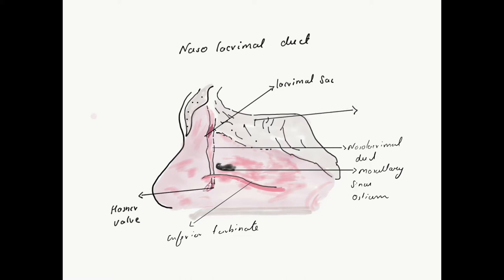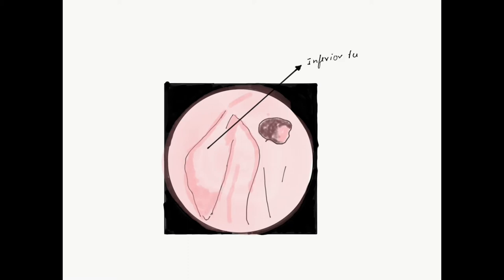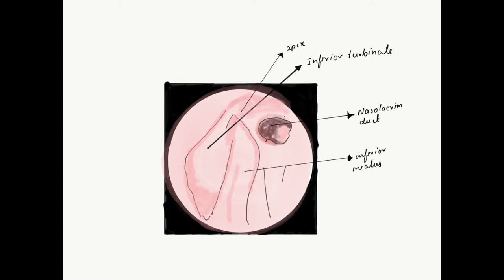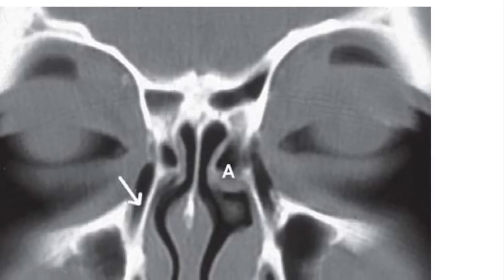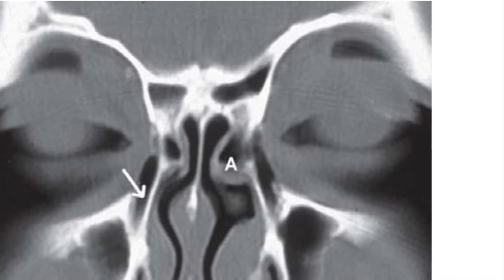Though the inferior turbinate has a linear attachment, anteriorly it shows a bend called the apex, which can be used to identify the nasolacrimal duct opening in endoscopy. In a diagram of the left nasal cavity, one can see the inferior turbinate, the inferior meatus, and the opening of the nasolacrimal duct near the apex. If it cannot be appreciated, one can press the nasolacrimal apparatus and see the flow of tears. In a coronal CT, one can also appreciate the nasolacrimal duct in this position.